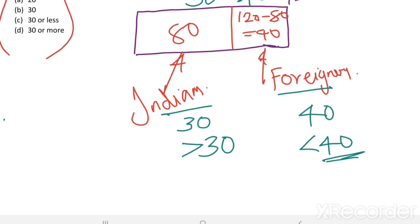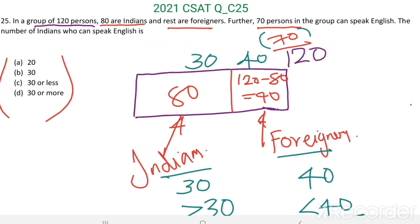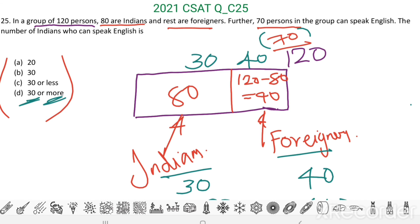Less than 40 means if there are 39 foreigners, there should be 31 Indians. If it is 38, then 32. So we can say the number of Indians who can speak English is 30 or more. Option D is the right answer.